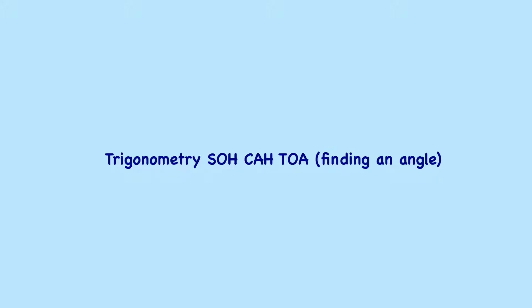Trigonometry: Finding an angle. In the previous clip we looked at finding sides using our SOH CAH TOA triangles. In this clip we will use our SOH CAH TOA formula triangles to find angles.